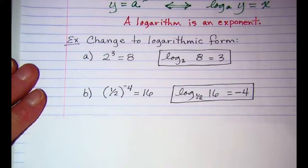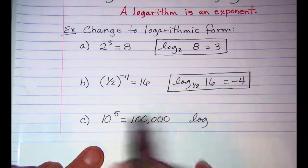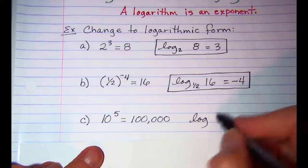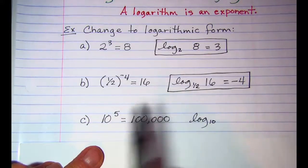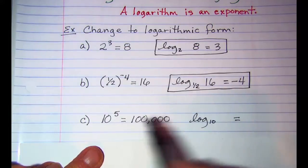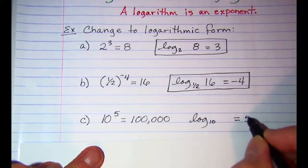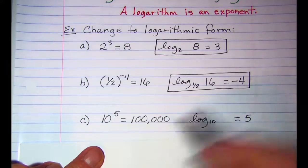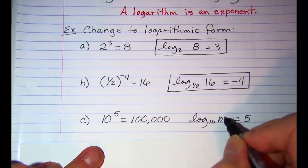Another example. The base of our exponential is 10, so the base of our logarithm is 10. We know that the log is an exponent, so 5 is our exponent and that's what our log is equal to. And then our argument on the logarithm will be 100,000.